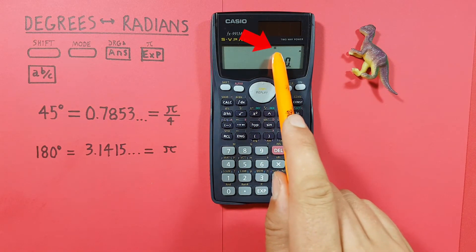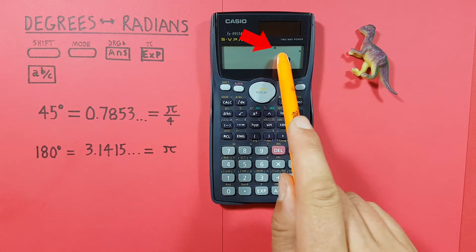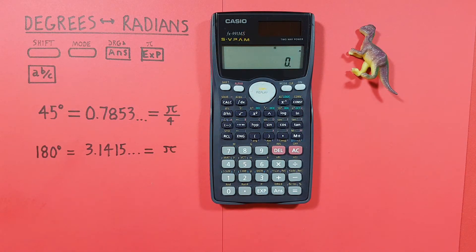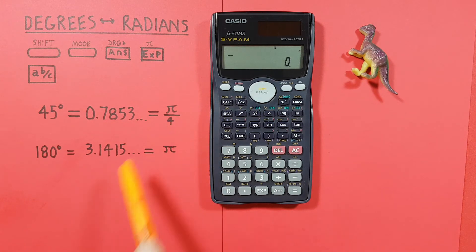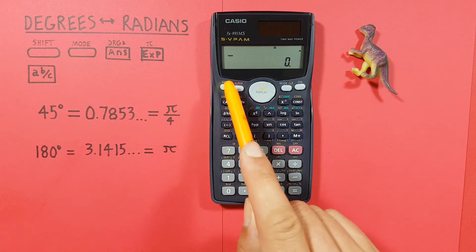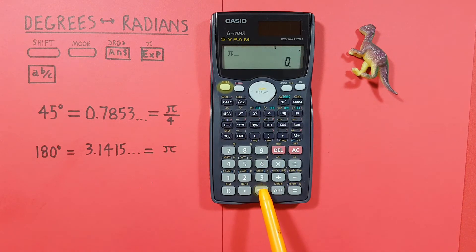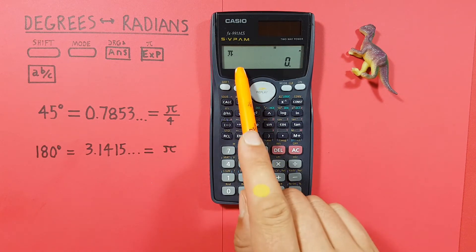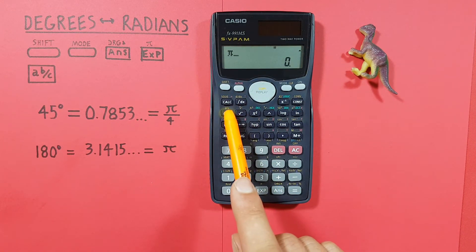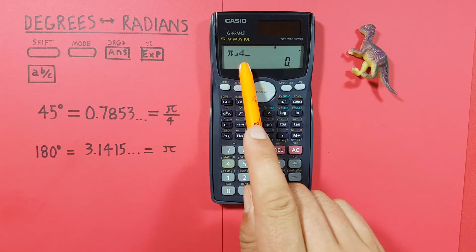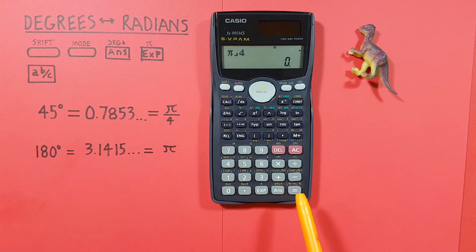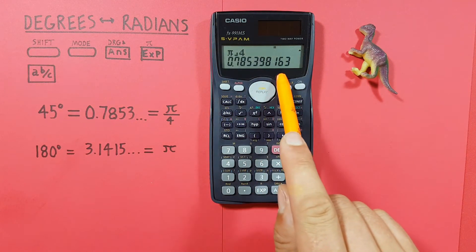We see the D at the top of our screen, so we know we're in the right mode. Next we enter our radian, so we'll do pi over 4. To do that we press shift, exp key — there's our pi — and then our fraction key, 4. Now if we press equals, we see we get our radians as a decimal form, which we had before.